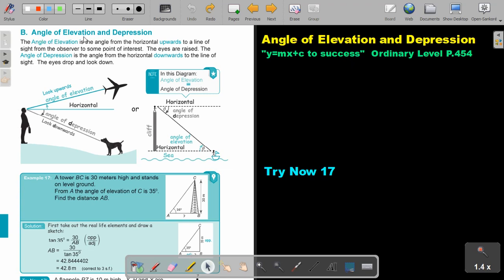Angle of elevation and depression. The angle of elevation is the angle from the horizontal upwards to a line of sight from the observer to some point of interest, from the horizontal to the aeroplane, up that angle. The eyes are raised.